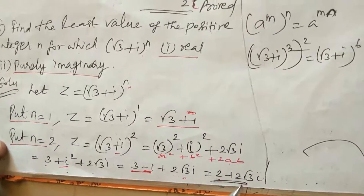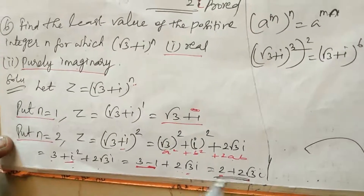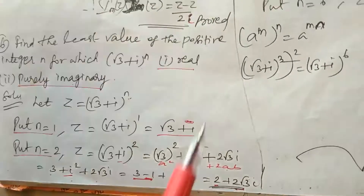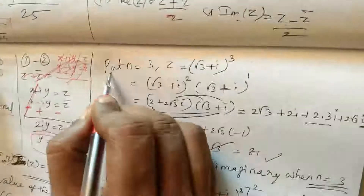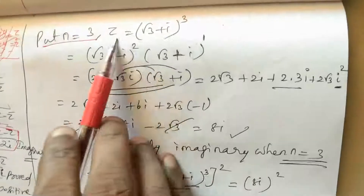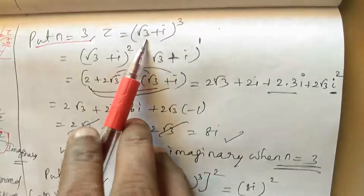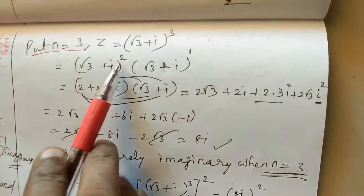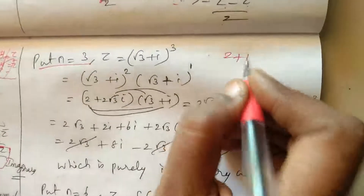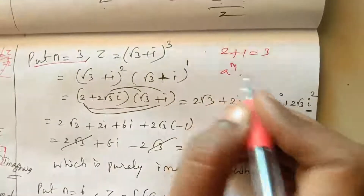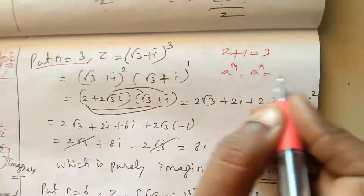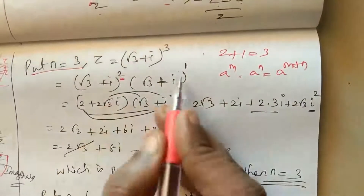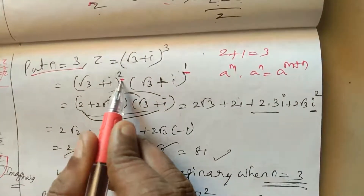For n equals 3, we write (√3 plus i)^3 as (√3 plus i)^2 times (√3 plus i)^1. We already have (√3 plus i)^2 equals 2 plus 2√3·i. Using the rule a^m times a^n equals a^(m+n), we substitute and multiply out.